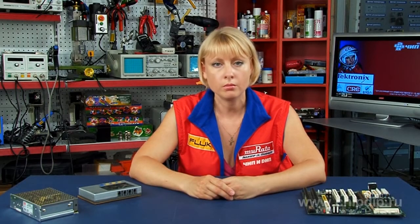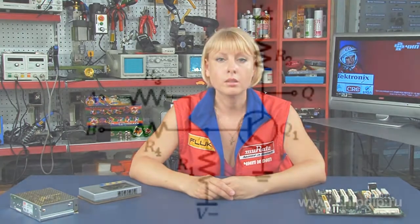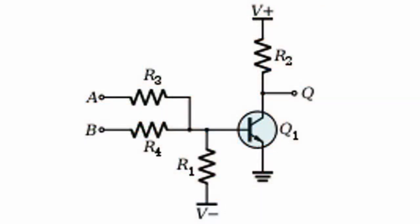The RTL scheme is implemented in the following way. The collector of the transistor key is connected through a resistor to the bus of power supply, and the emitter is connected to the body. Resistors, which are inputs, are connected to the base. In the absence of voltage on all inputs, the transistor is closed; in the presence of voltage on at least one input, the key opens and shorts the output to ground, squandering the output voltage to almost zero.